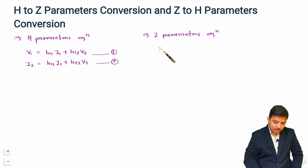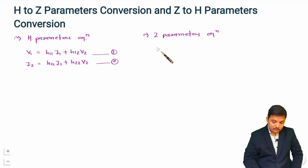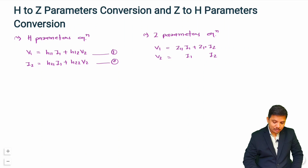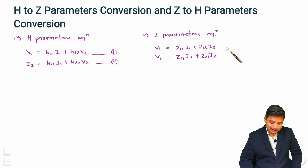The z-parameter is the impedance parameter, so obviously v equals z times i — that is how you can remember this. Voltages v1 and v2 are based on currents i1 and i2. So: v1 = z11·i1 + z12·i2, and v2 = z21·i1 + z22·i2. Let us call these equation 3 and equation 4.